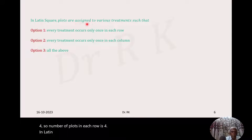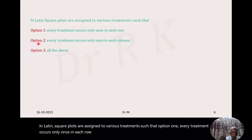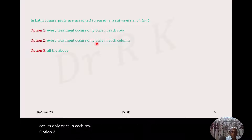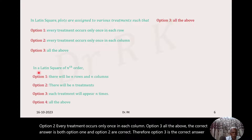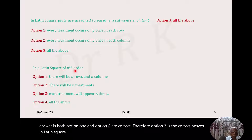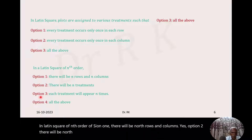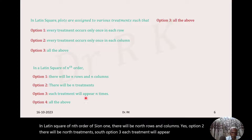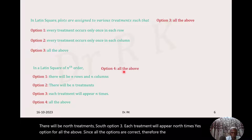In Latin square, plots are assigned to various treatments such that every treatment occurs only once in each row, and every treatment occurs only once in each column. Both options are correct, therefore option 3, all the above, is the correct answer. In a Latin square of nth order, there will be n rows and n columns, there will be n treatments, and each treatment will appear n times. Since all options are correct, the correct answer is option 4, all the above.